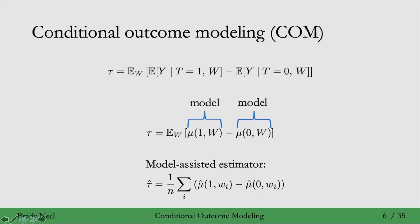In order to approximate this expectation over w, we take a sum over all the data samples i and then we use that i to index w here. Because it's a mean we normalize that sum so we divide by one over n where n is the number of samples. So that's how we get an estimate for the ATE using conditional outcome modeling. Here mu is the conditional outcome model.